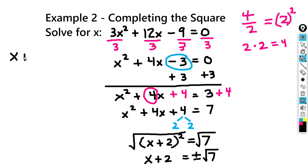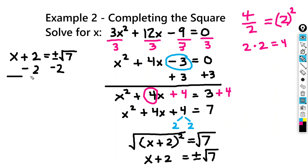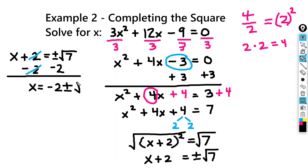So x plus 2 equals plus or minus the square root of 7. We're going to subtract 2 from both sides, and on the left-hand side the 2s will cancel. And you're left with x equals negative 2 plus or minus the square root of 7.